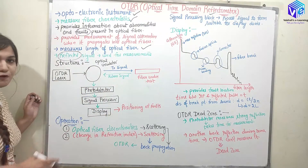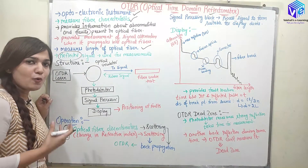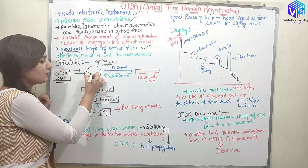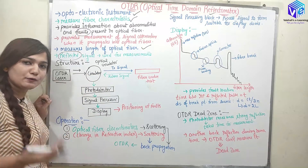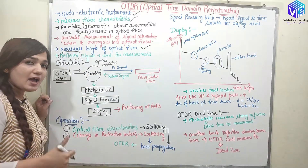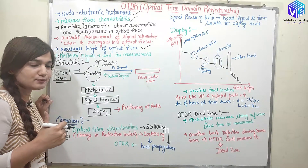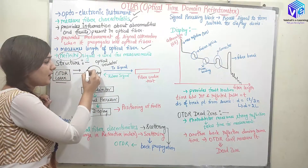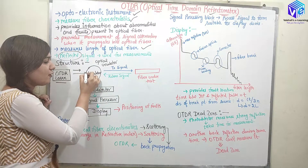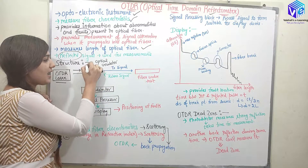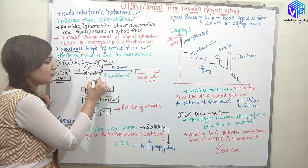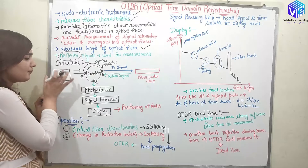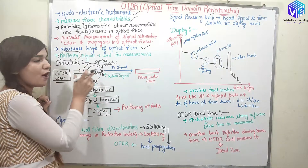This is the structure of OTDR. Here we have a laser which emits light and sends it to the circulator. The circulator is a one-directional device. The OTDR laser sends light to the circulator, which sends it from terminal A to terminal B only — it does not go to terminal C.